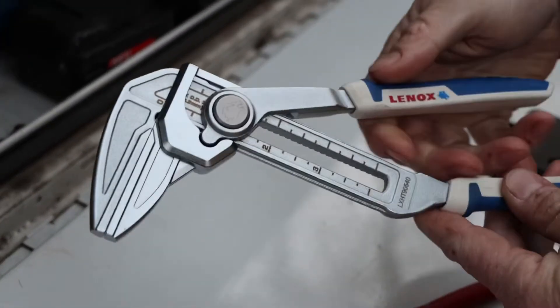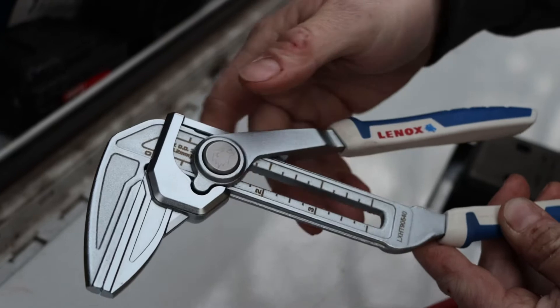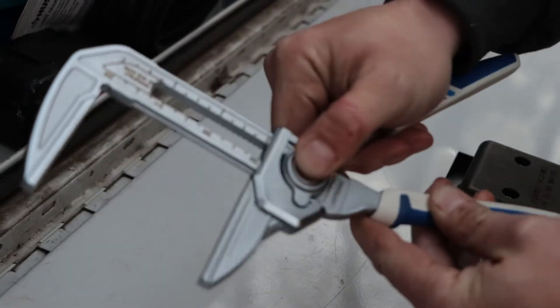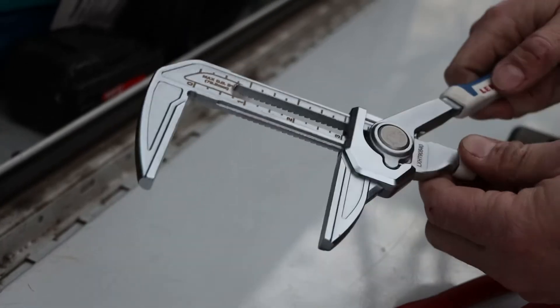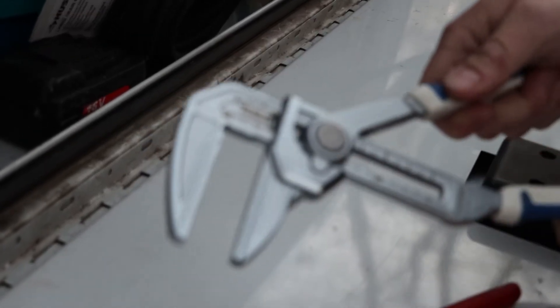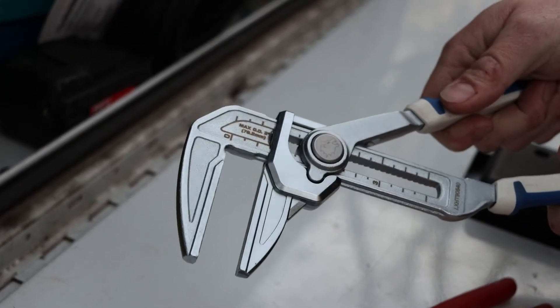And then lastly is the Lennox. I just recently purchased these and the main reason I purchased these is because the jaw capacity goes up to three inches, which is really cool. And then you also have the ratcheting adjustment on it too, which is really nice.